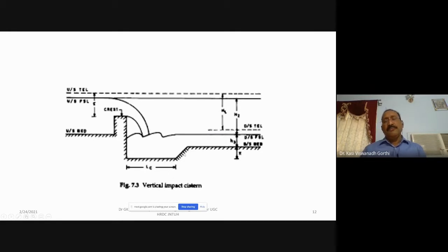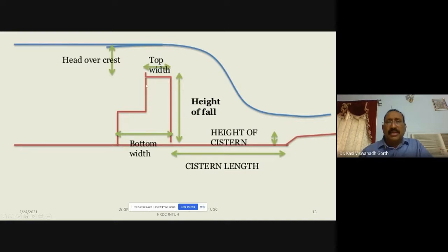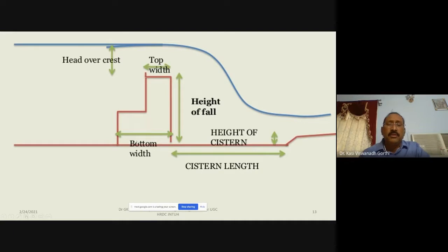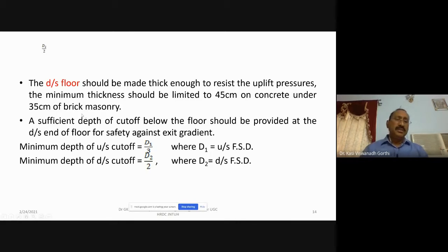In a rectangular Sarda type of weir, the top width is B and the bottom width is B1. Though it is rectangular (no inclined upstream or downstream slopes), the bottom width is still increased to B1 to economize material usage — otherwise the full bottom width B1 would need to be provided throughout the entire height. The downstream floor should be made thick enough to resist uplift pressures, with a minimum thickness of about 45 cm for concrete and 35 cm for brick masonry.